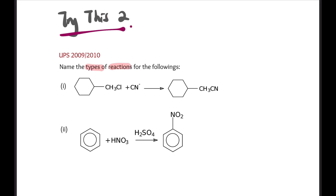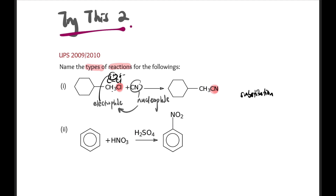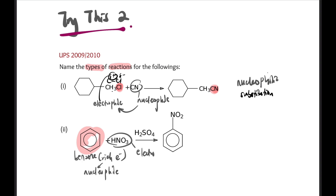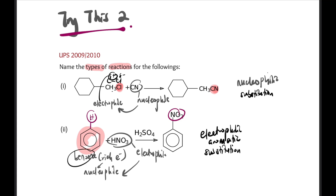Next practice: name the type of reaction. First: Cl at the end changes to CN — that's substitution. The carbon is partially positive (electrophilic site), attacked by a nucleophile — nucleophilic substitution. Second: benzene ring is electron-rich (nucleophilic), attacked by an electrophile. NO2 replaces an H on benzene — that is electrophilic aromatic substitution because it occurs on a benzene ring.